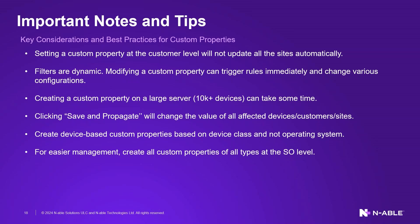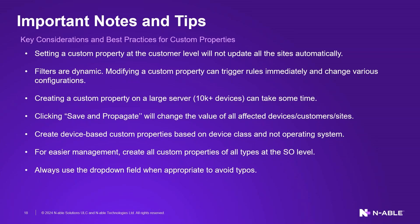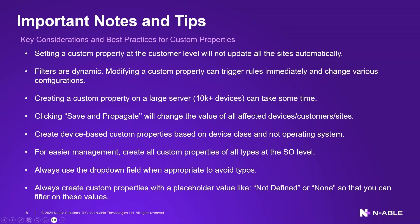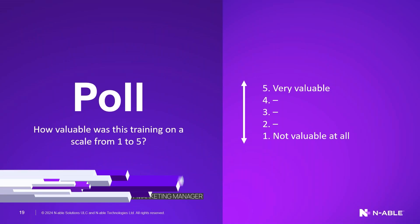For easier management, create all custom properties at the service org level. There's nothing worse than thinking you created a custom property for a customer but realizing it's only at the customer level. Always use drop-down fields when appropriate to avoid typos — whereas with text type you can mistype values. Always create custom properties with a placeholder value like 'Not Defined,' 'None,' 'No,' or even a period — just have something there so you can filter on those values.